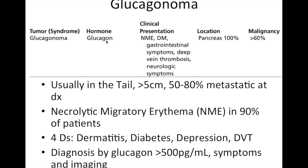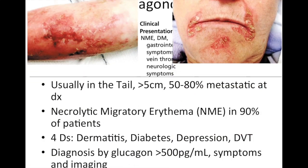Glucagonoma is associated with the four Ds syndrome. All are in the pancreas, usually in the tail, most will be malignant, and most are metastatic at time of diagnosis. The rash associated is called NME — necrolytic migratory erythema — present in the majority of patients. The four Ds are: dermatitis, diabetes, depression, and DVT. Diagnosis is by a very high glucagon level plus symptoms and imaging.